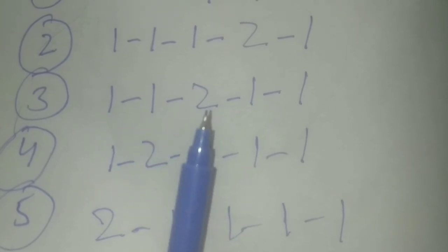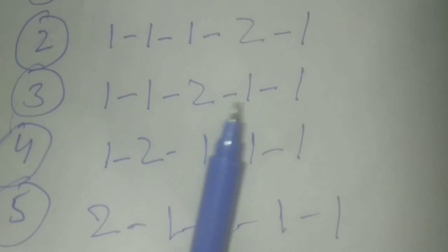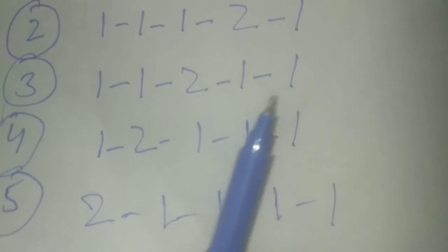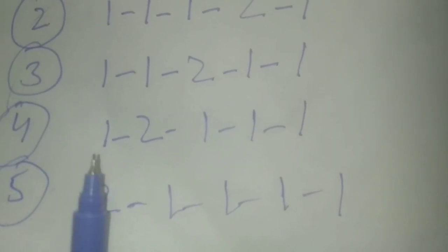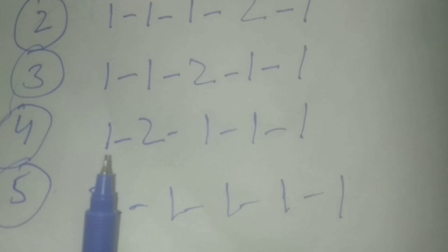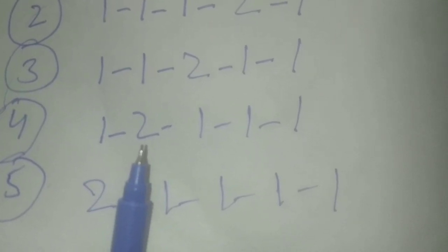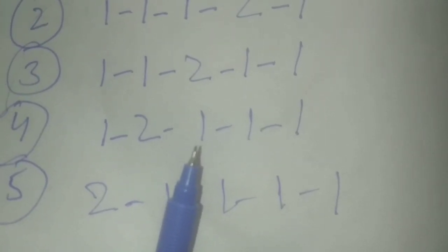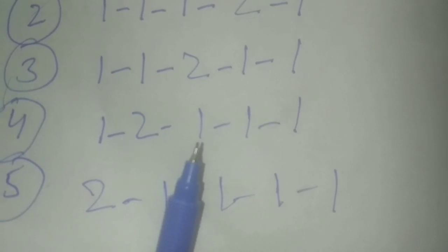In number 3, 1 to 9 one pair, 10 to 19 two pairs, 20 to 29 one pair, 30 to 39 one pair, 40 to 49 one pair.